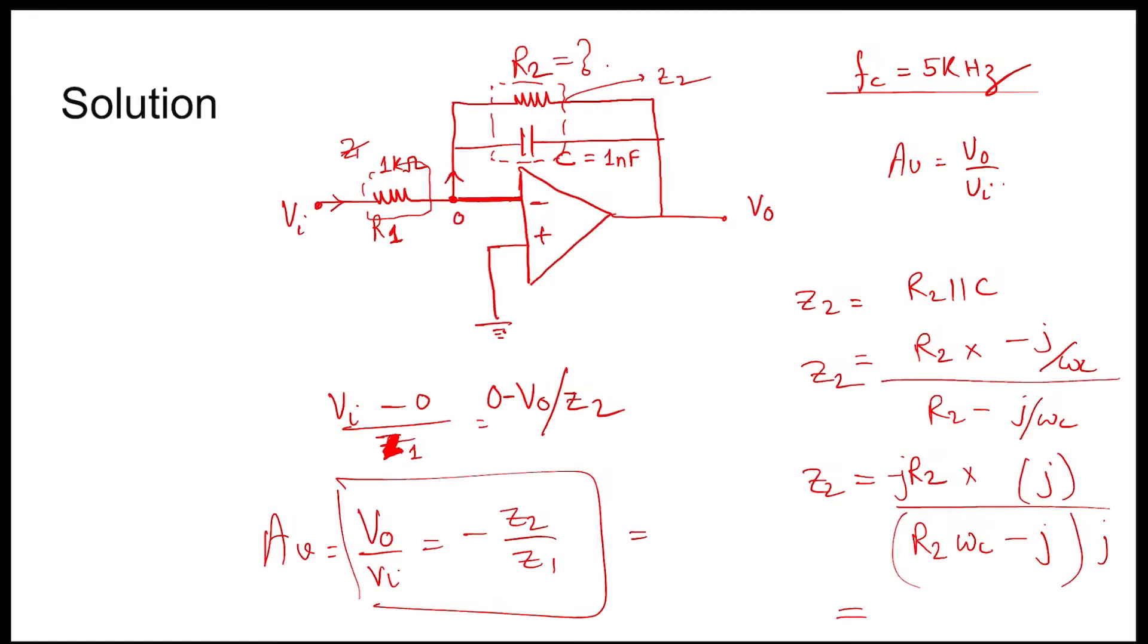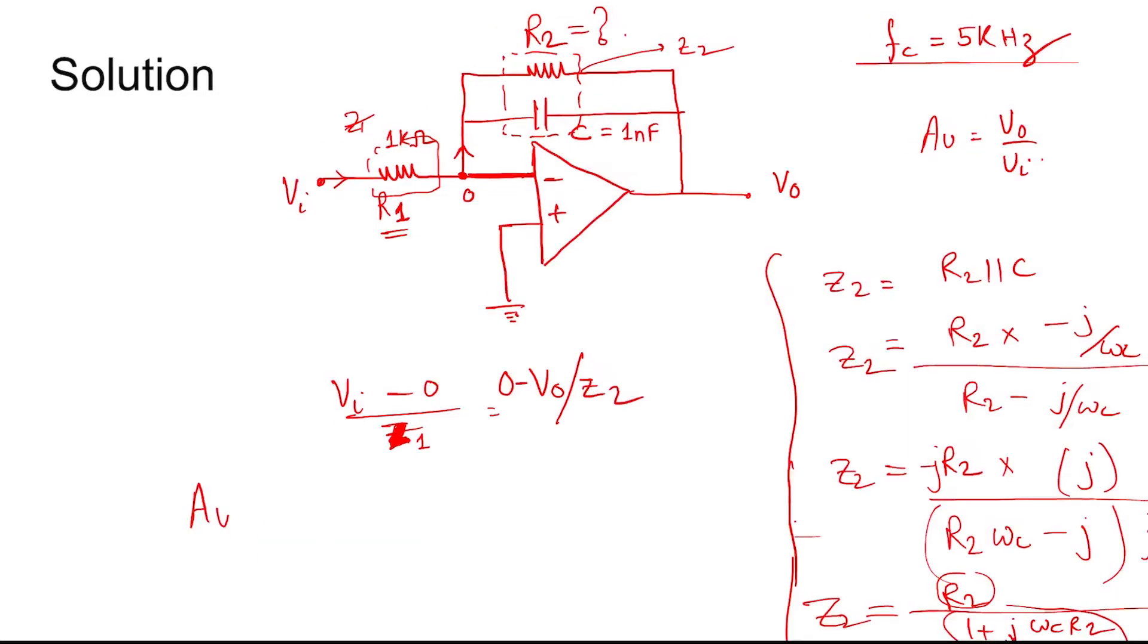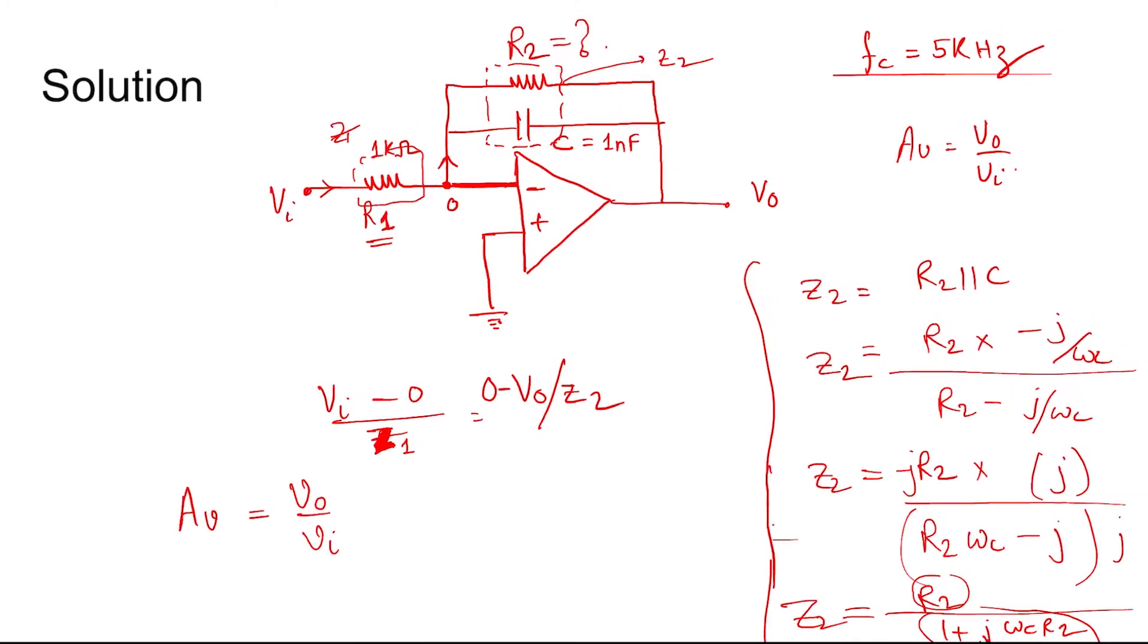j² is -1, minus j² is plus 1. So R2 divided by (minus j² is plus 1) equals 1 plus jωCR2. So this is the value of Z2. Now the gain is V0 by Vi.